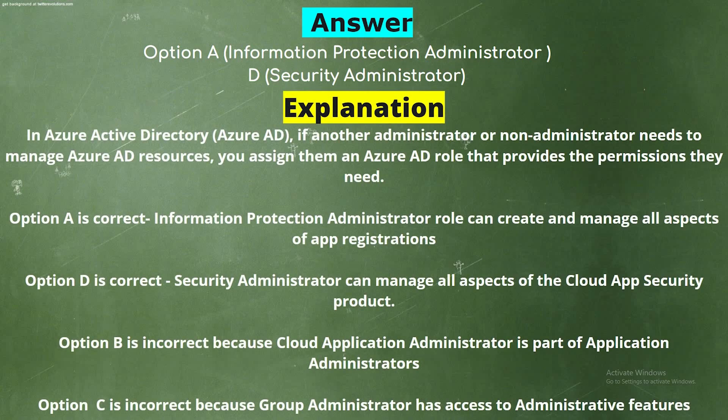Explanation: In Azure Active Directory, if another administrator or non-administrator needs to manage Azure AD resources, you assign them an Azure AD role that provides the permissions they need. Option A is correct — Information Protection Administrator can create and manage all aspects of app registrations. Option D is correct — Security Administrator can manage all aspects of the cloud app security product. Option B is incorrect because Cloud Application Administrator is part of Application Administrators. Option C is incorrect because Group Administrator has access only to administrative features.